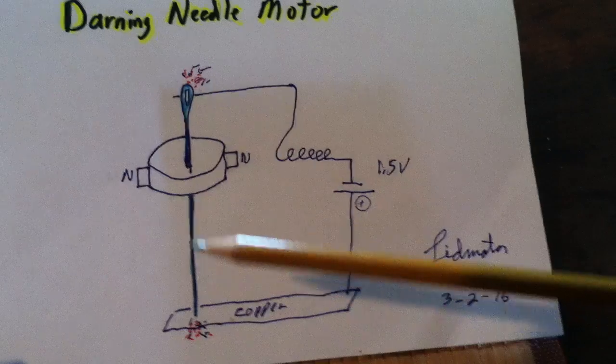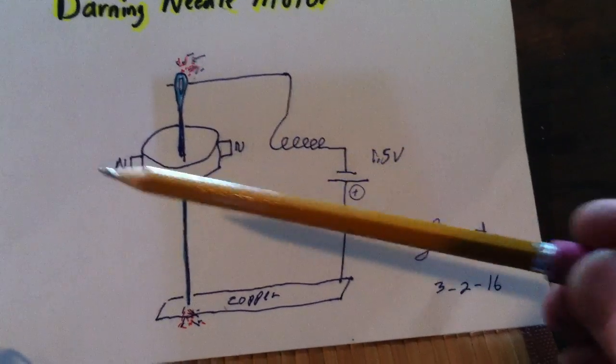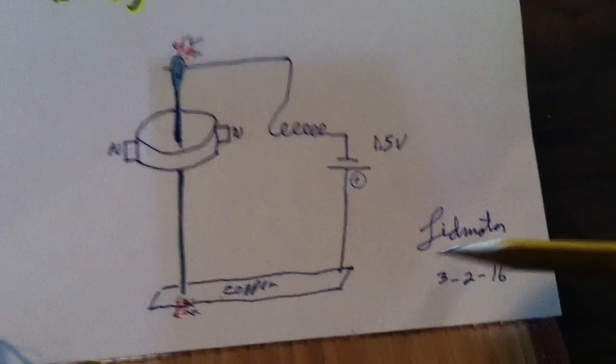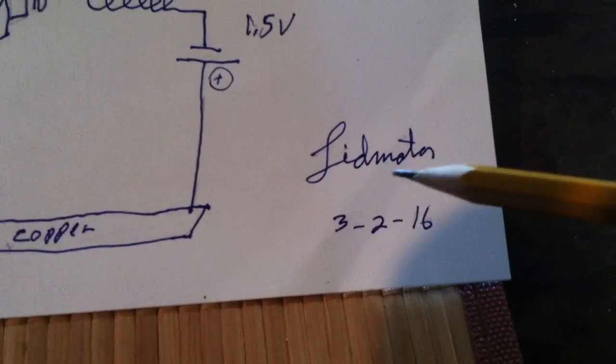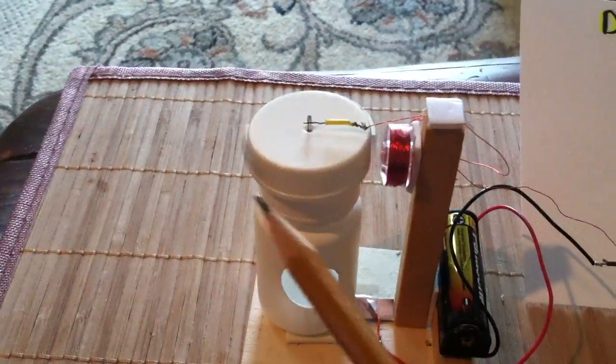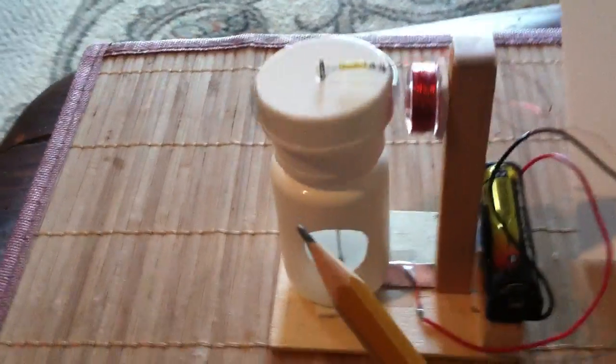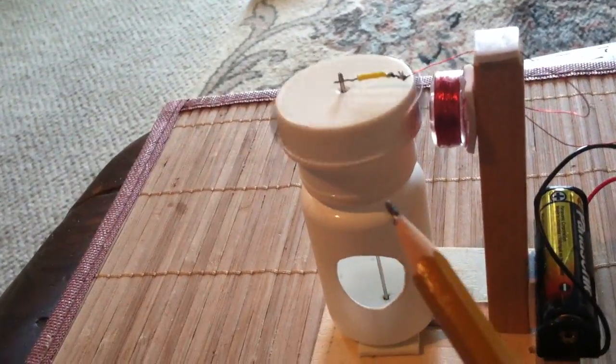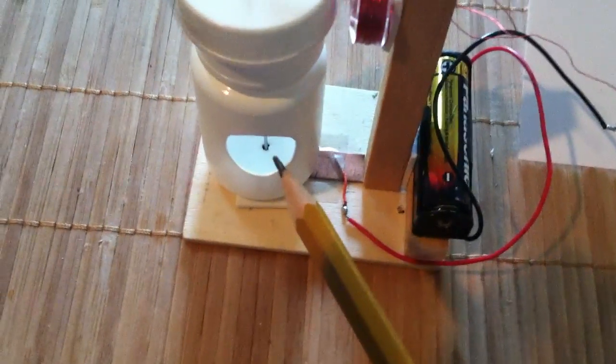This is a second of March 2016 lid motor, and I'm calling this the darning needle motor. What I'm using here is a couple of jar lids - this is the rotor jar lid, and then under there is another jar lid that has a hole in it big enough to support the needle. And then the bottom of that little bottle has a hole, and underneath that is a piece of copper strip with the other wire just taped on it.